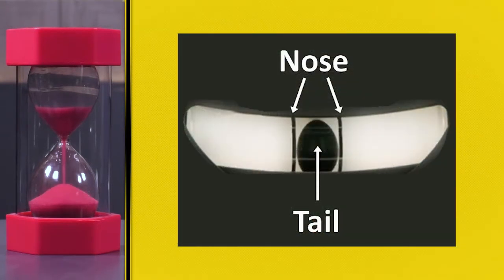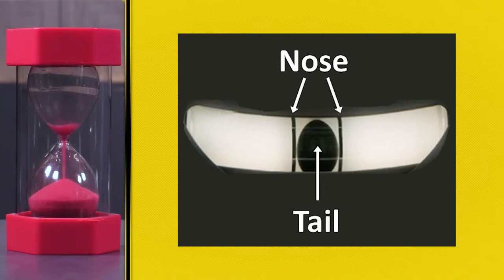Think of the cage: the center section of the inclinometer is the airplane's nose, and the ball is the airplane's tail. When the ball is centered, the tail is tracking the nose, and your airplane is happily experiencing coordinated flight.